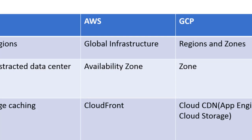If you're familiar with AWS, you'll likely be able to correlate this fairly easily. Google Cloud uses what's called regions and zones, and we have an abstracted data center called a zone. The data center is going to be in a specific region, and that region will have multiple zones. We'll talk more about that coming up — there are a few maps we'll discuss.